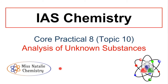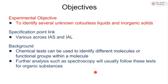Now let's move on to core practical 8: the analysis of known substances, which is essentially chemical tests. The objective is to be given unknown colourless liquids and inorganic solids, then use various methods to identify them. Chemical tests were covered at GCSE and throughout the IAS course, and we use them to identify different molecules or functional groups. Further analysis like spectroscopy follows these tests to completely confirm structures, but here we focus on functional groups.